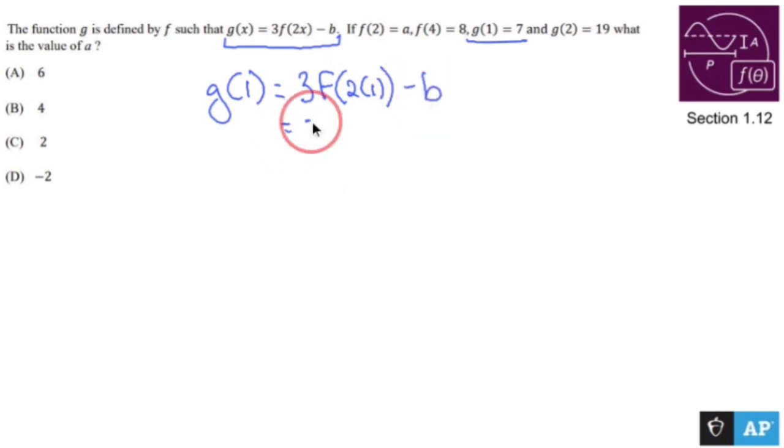So this simplifies to 3 times f of 2 minus b. Ooh, f of 2 is a. So this becomes 3a minus b.